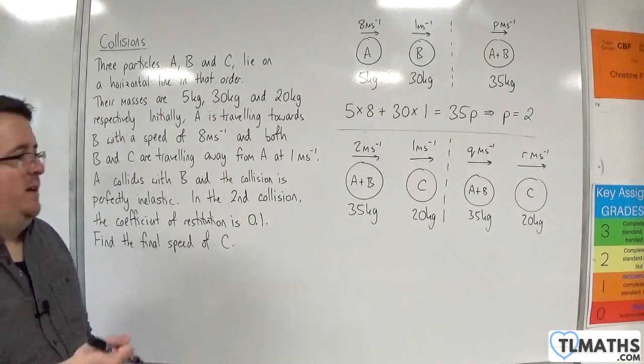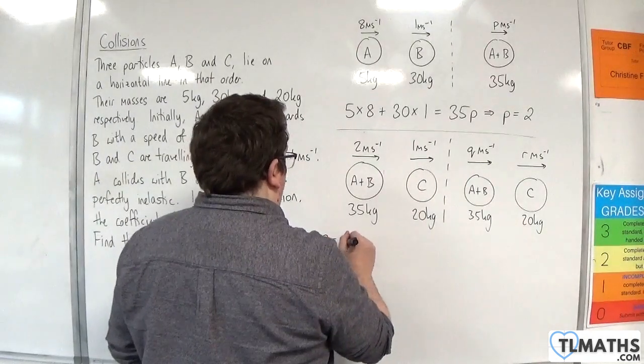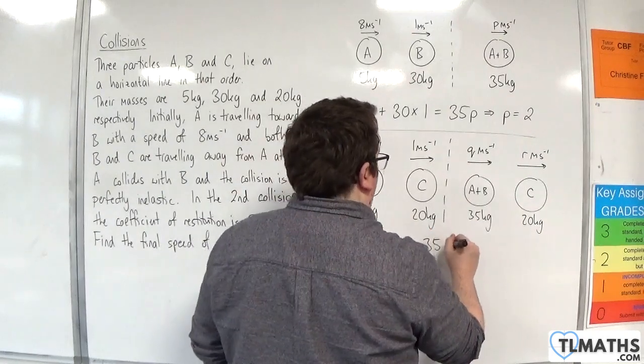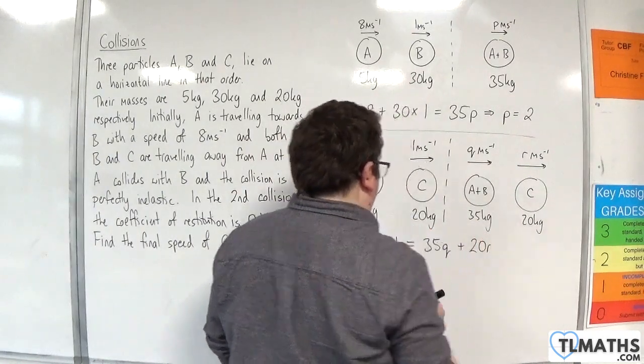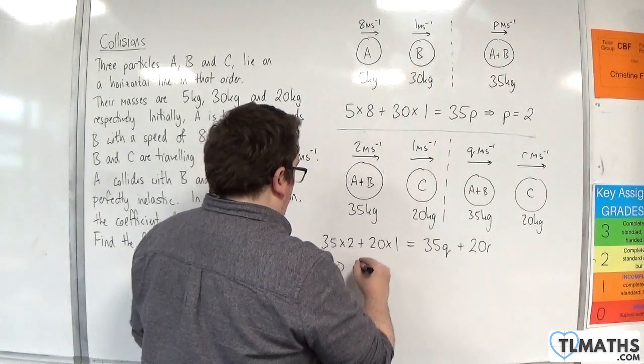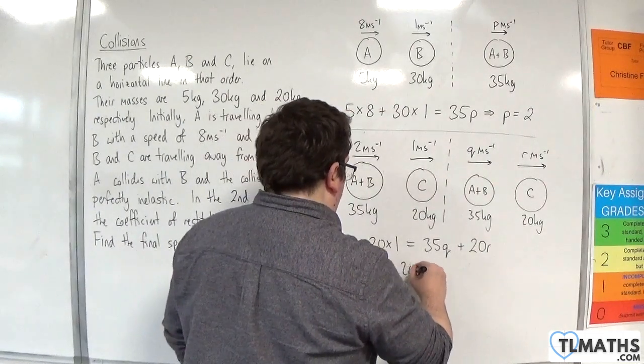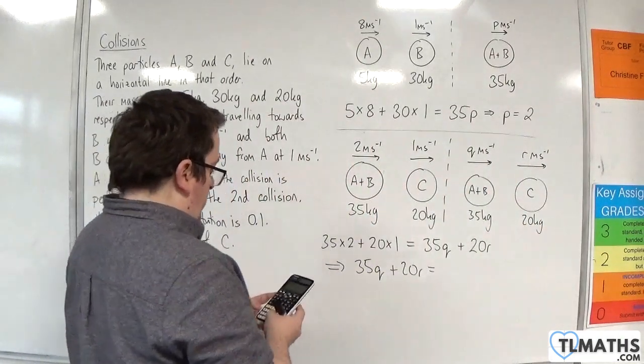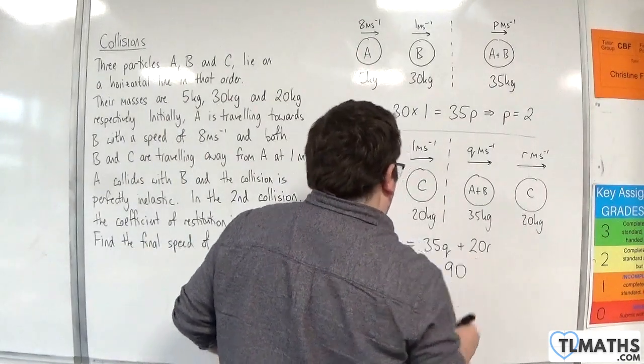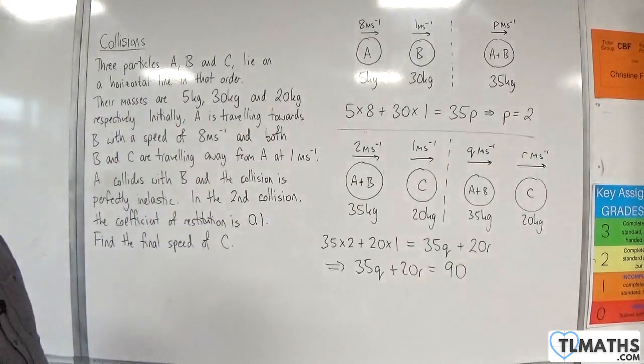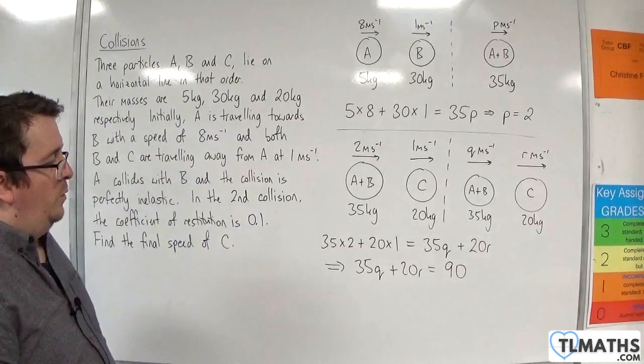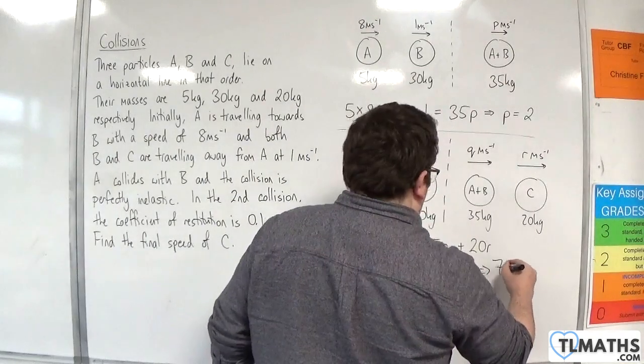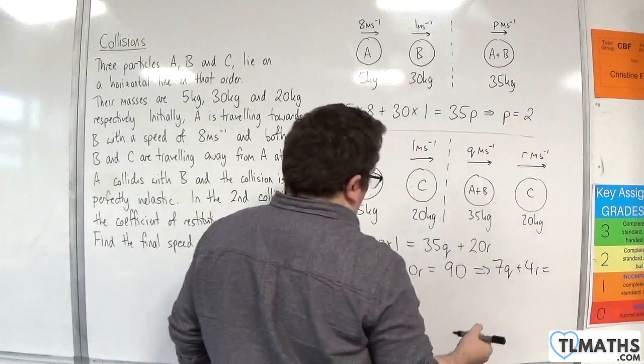We'll use the conservation of linear momentum here. We have 35 times 2 plus 20 times 1 is going to be equal to 35Q plus 20R. So 35Q plus 20R is 35 times 2 plus 20, so 90. Now, I could simplify that equation down. Divide through by 5, we'll get 7Q plus 4R is equal to 18.